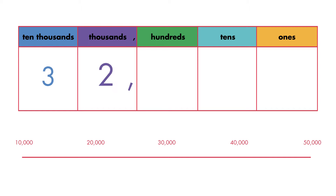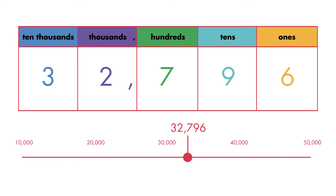If we want to round the number 32,796 to the nearest 10,000, we need to place it on a number line that counts by 10,000s. 32,796 is in between 30,000 and 40,000. We can tell from the number line that it is closer to 30,000. 32,796 rounds down to 30,000. So, we can say there were about 30,000 visitors at the zoo.